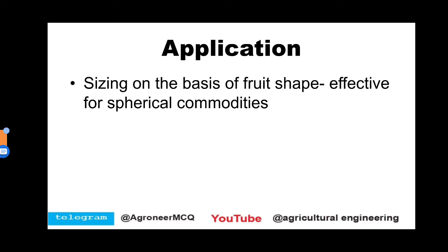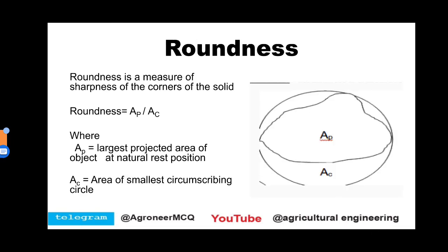Sizing is effective for spherical commodities. We should know the shape of a fruit or vegetable for sizing purposes. After shape, there are a few terms. Roundness is a measure of sharpness of the corners of the solid. The formula for roundness is Ap divided by Ac, where Ap is the largest projected area of the object at its natural rest position.